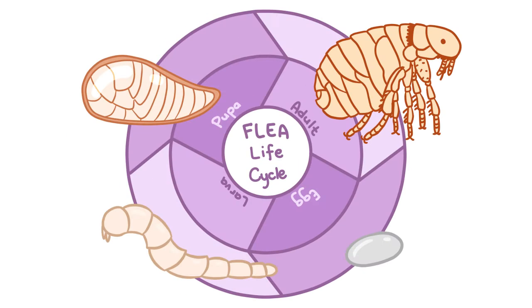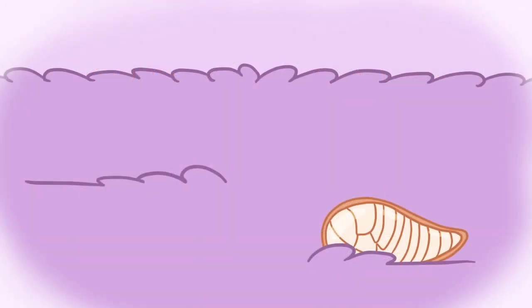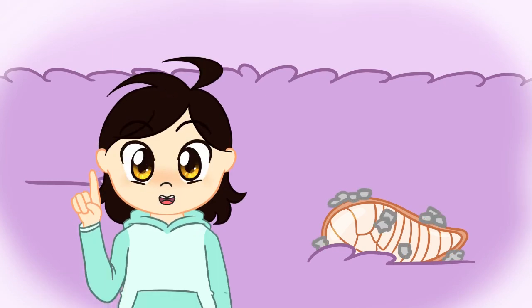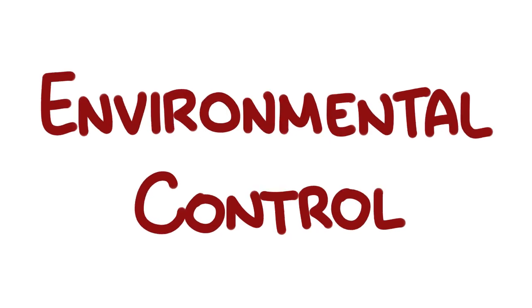There aren't any products that target the pupal stage. That stage is pretty sturdy. As mentioned in the fleas part 1 video, that stage is also resistant to desiccation and fleas can remain in that stage for months. I again state the importance of staying on medication until the fleas are completely gone, even the stages that don't live on your pet.